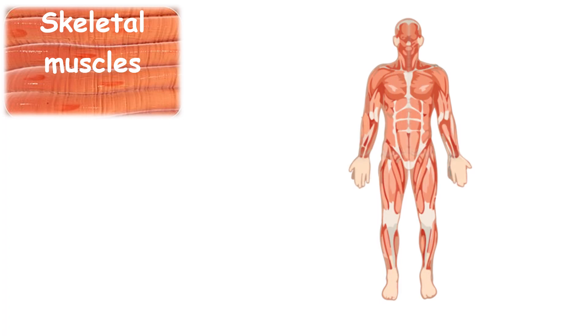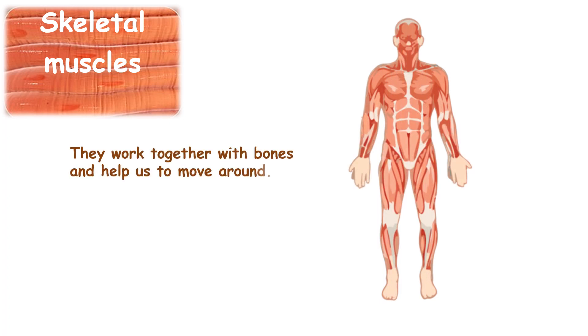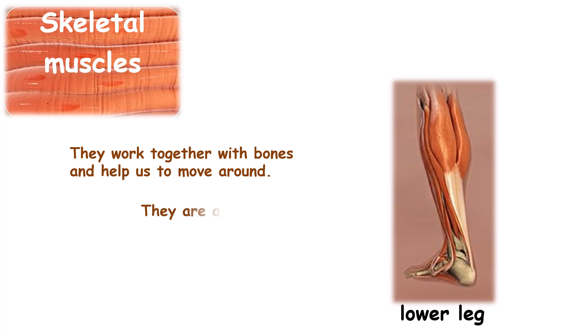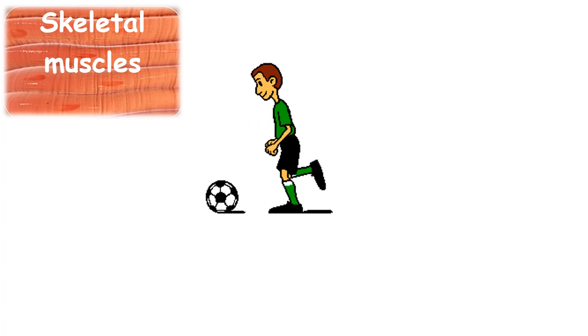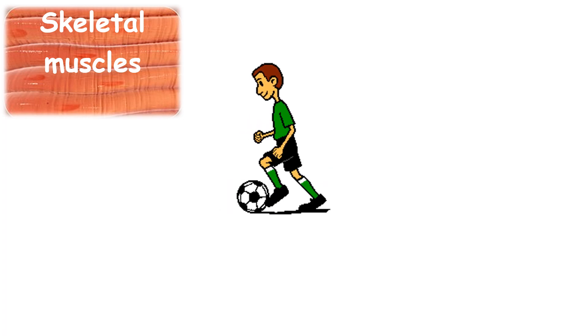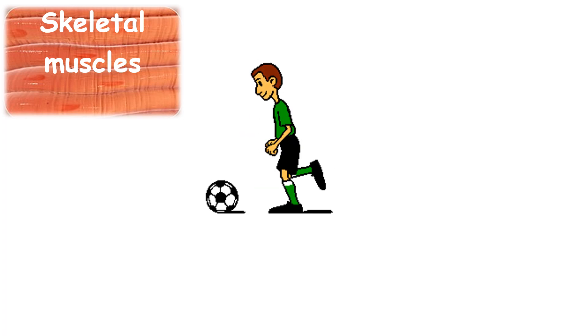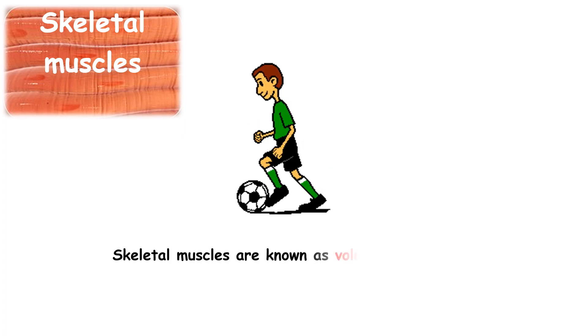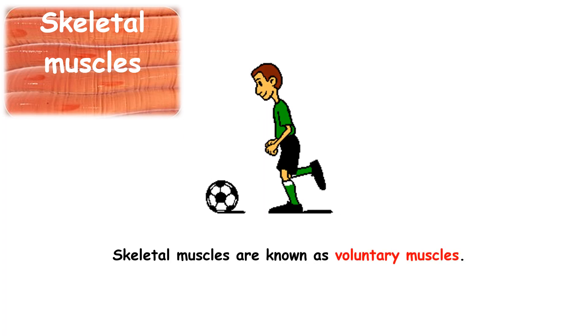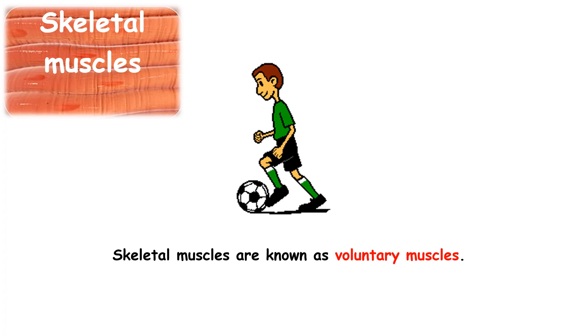Skeletal muscles. These muscles cover our skeleton. They work together with bones and help us to move around. They are attached to the bones with a strong tissue called tendon. They function according to our will — that is, we can move them when we want to. And so skeletal muscles are known as voluntary muscles.